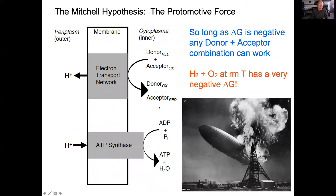ATP is made through what's called a proton motive force — the Mitchell hypothesis. If you couple an electron donor to an electron acceptor, you drive protons from one side of a membrane to the other, creating a pH gradient. Protons are then forced through an enzyme complex called ATP synthase, which takes ADP and phosphorylates it to make ATP. So long as delta G is negative for any donor-acceptor pair, this will work.